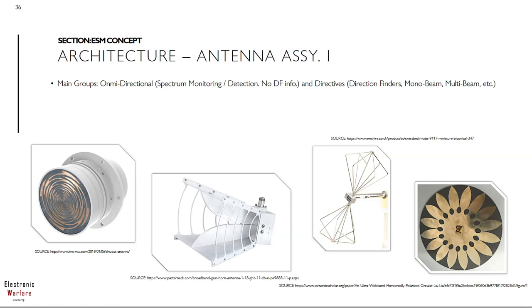Horn antennas, in contrast to the sinus cavity, can be used as a transmitter for countermeasures — ECM — as well as a receiving element — ESM. They are quite robust for outdoor installation and simple to handle. Electrical advantages include high gain and typically constant beamwidth over frequency, which is super interesting for amplitude comparison direction finding techniques, which we will depict later on.